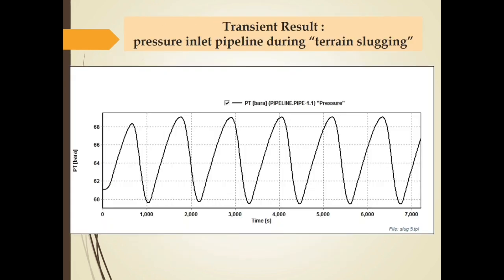Slide ini adalah contoh hasil transient analysis untuk tekanan inlet pipeline selama terrain slugging. Terlihat bahwa tekanan naik turun dan tidak stabil selama terjadinya slugging. This slide is an example of transient analysis results for inlet pipeline pressure during terrain slugging. It can be seen that during slugging, the pressure is unstable and fluctuates up and down.